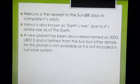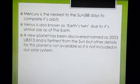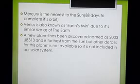Mercury is nearest to the Sun and takes 88 days to complete its orbit. Venus is also known as Earth's twin because the size of Venus is similar to that of Earth. There was a newly discovered object named 2003 UB313, very far from the Sun, but since details were not available it is not included in our solar system.